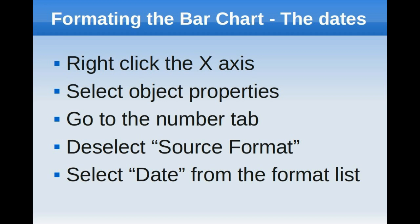Now, to change the numeric values at the bottom to dates, you want to right-click on the x-axis, select object properties, then go to the number tab, deselect the source format checkbox, and select date from the format list over on the left.